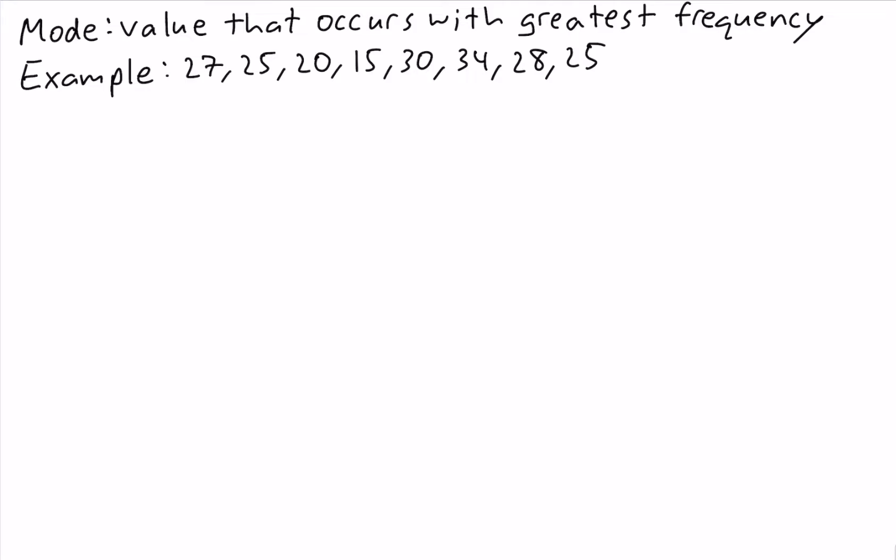So each of the values in this data set occurs once, except for one of the values. 25 occurs twice, so 25 is our mode.